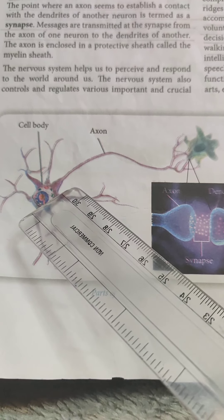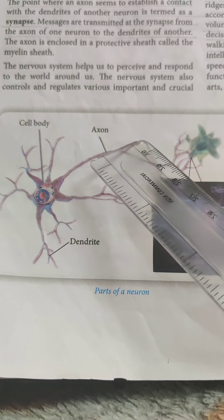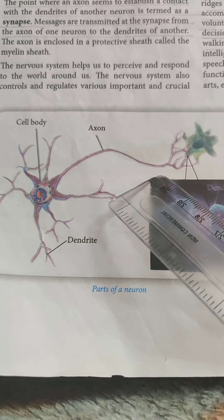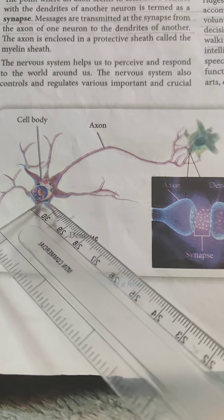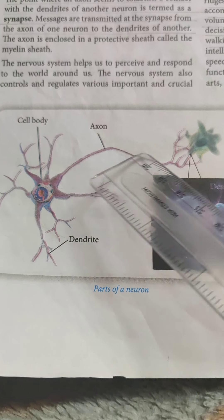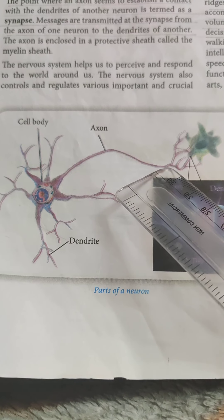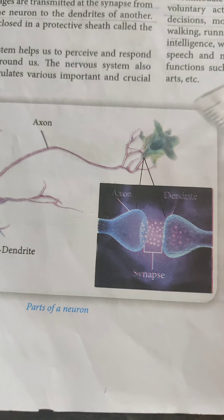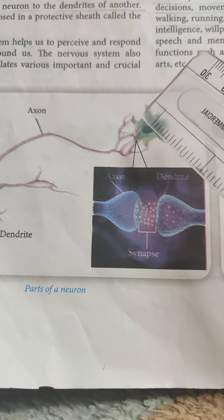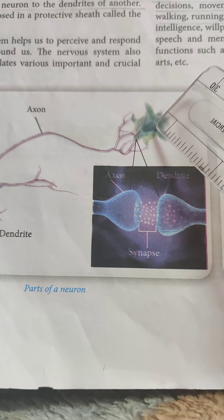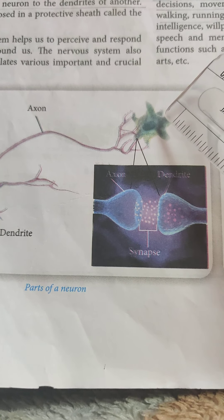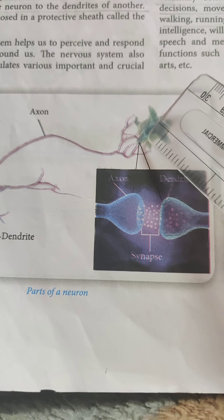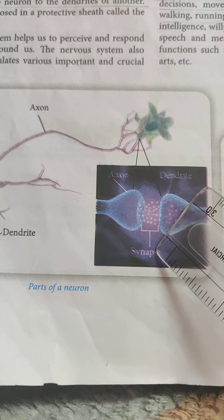Axon is the single long cellular extension that carries impulses from the cell body and transmits them to either other neurons or to other organs. The point where an axon seems to establish a contact with the dendrite of the next neuron is called a synapse.